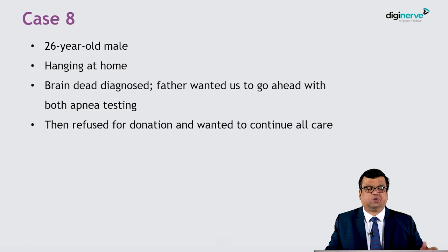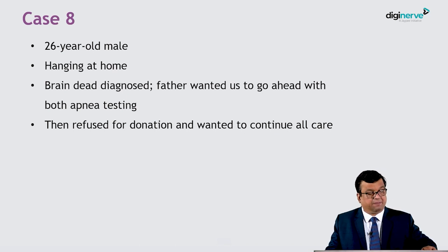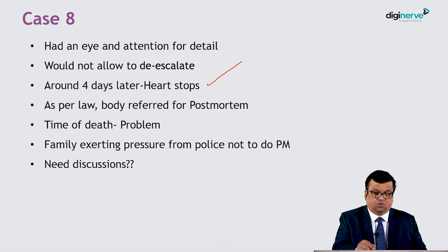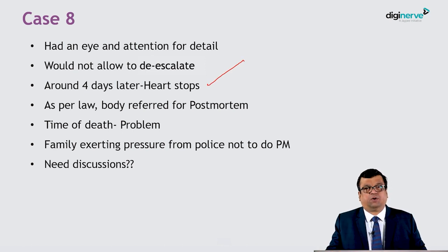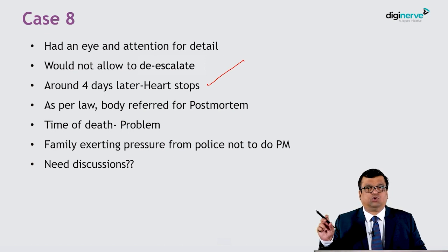A real-life scenario: a 26-year-old hanging victim brought in, who essentially became brain dead due to severe hypoxic brain injury. The family initially wanted to consider organ donation, so we proceeded with testing, but then the family refused. They kept a close watch on everything, and since once the brain is dead the heart eventually stops, that's what happened — the heart stopped around four days later. As per the law, because brain stem death testing had been done four days prior, the timing of death was written four days ago.